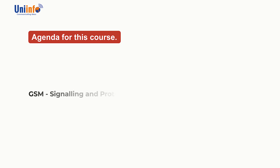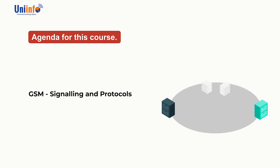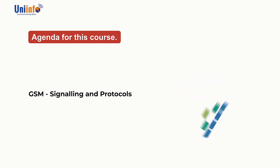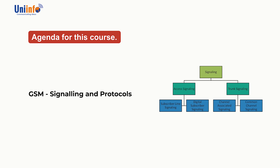GSM Signalling and Protocols: Signalling means the transfer of information and instructions relevant to controlling and monitoring telephony connections. It defines communication between the mobile device and the network. We will discuss the various types of signalling used in the GSM system.